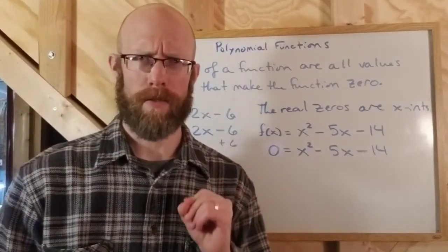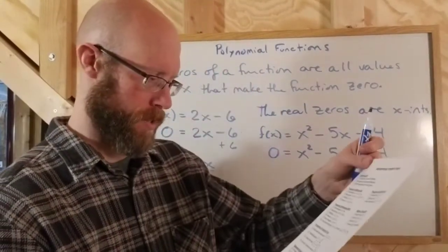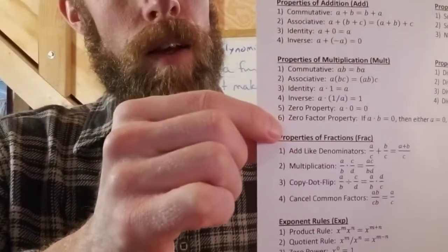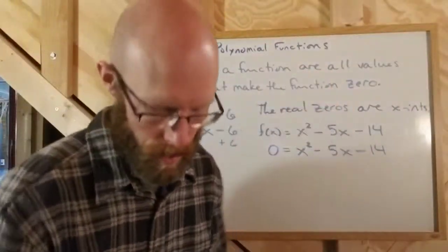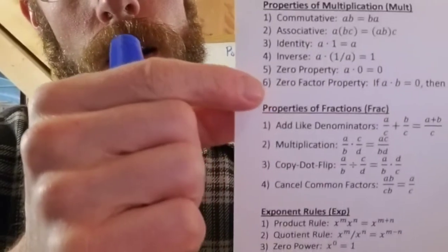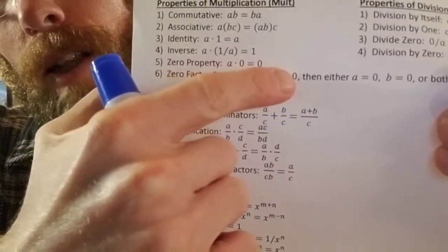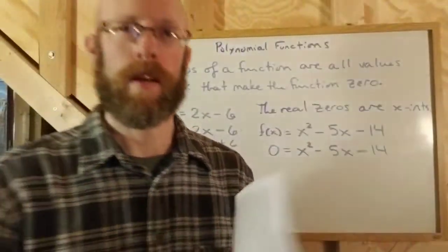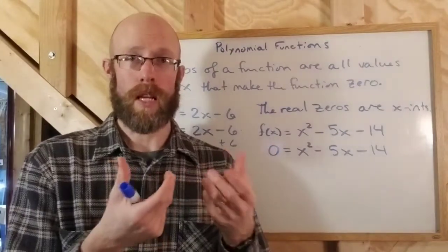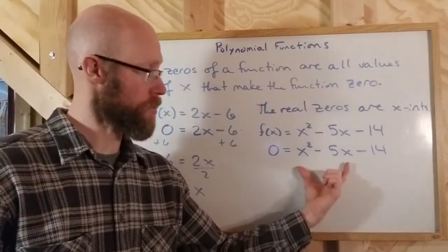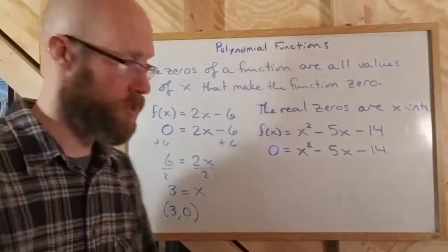It's also called the zero product principle — it's named different things. The zero factor property says: if you have two things multiplied together, A and B, and their product is zero, then at least one of those two things has to be zero — either A is zero, B is zero, or both. You can't possibly have a product equaling zero where neither of the factors was zero to begin with. That property tells us if we factor this polynomial, we set each factor equal to zero and solve.